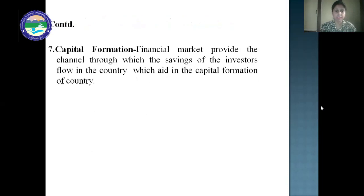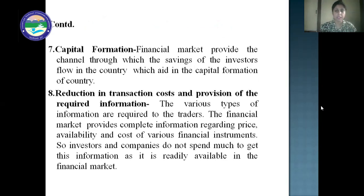Next is capital formation. The financial market provides the channel through which the savings of investors flow in the country, which aids in the capital formation of the country. So in a financial market, the savings of investors are converted into capital. Last is reduction in transaction cost and provision of required information. Various types of information are required by traders. The financial market provides complete information regarding price, availability, and cost of various financial instruments, so investors and companies do not spend much to get this information.